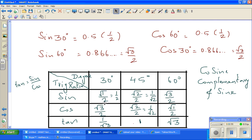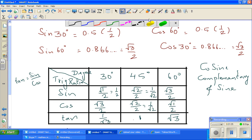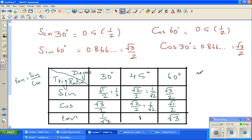Sin 30 is root 1 over 2. Sin 45 is root 2 over 2. So let me explain this. Let me delete this and explain how root 2 over 2 becomes 1 over root 2.